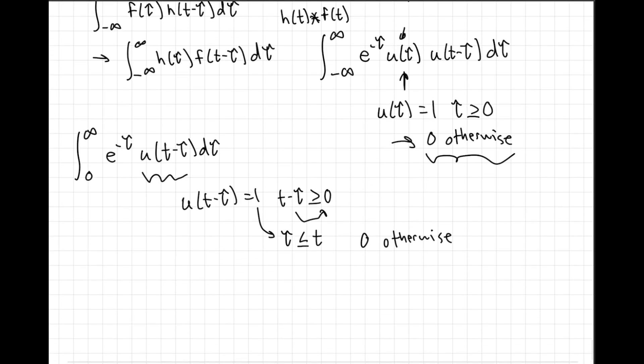Again, we can update our integration bounds and we get the integral from 0 to t of e to the negative tau d tau. And this is an integration that we can solve. We just get negative e to the negative tau evaluated from 0 to t, which equals negative e to the negative t minus negative e to the negative 0. This one goes to 1, these two minuses become a plus, and we get 1 minus e to the negative t.